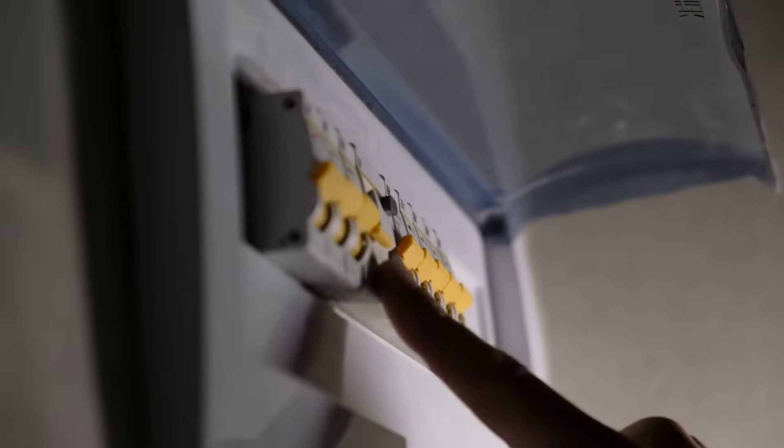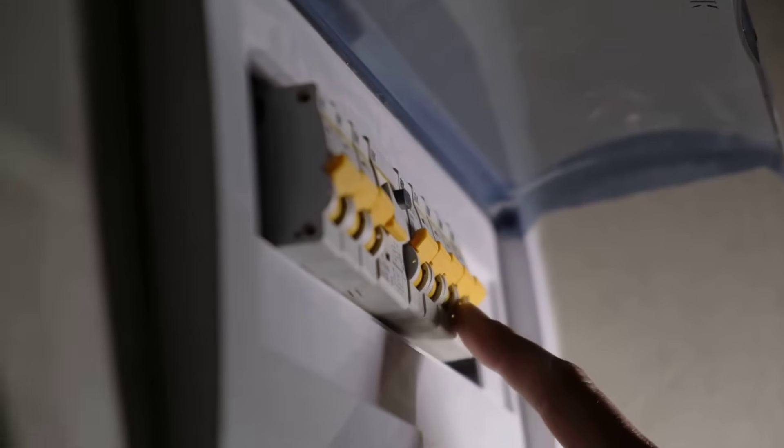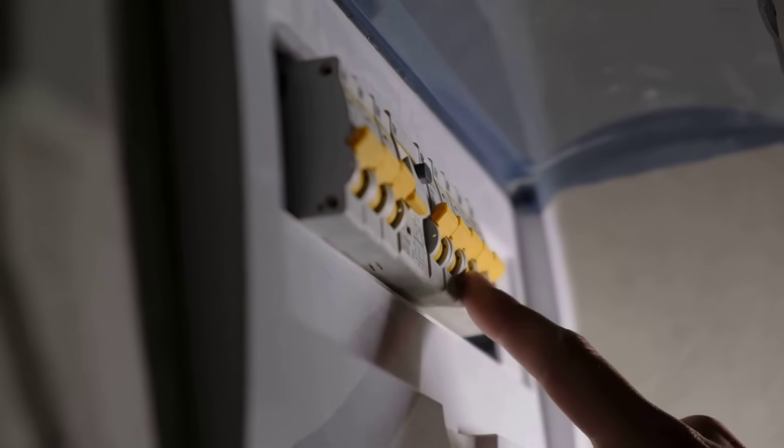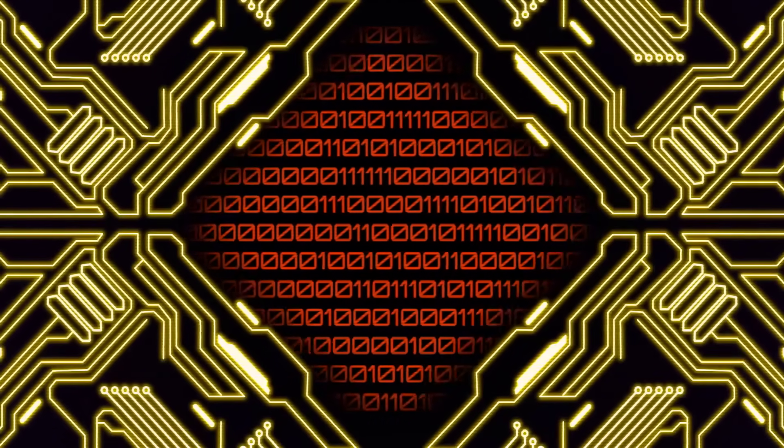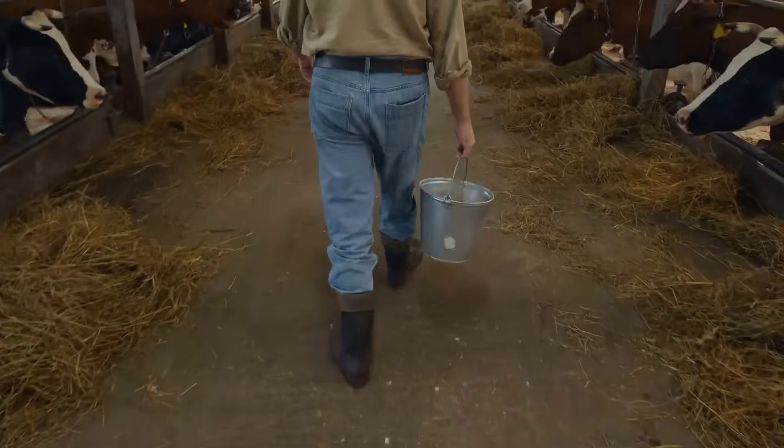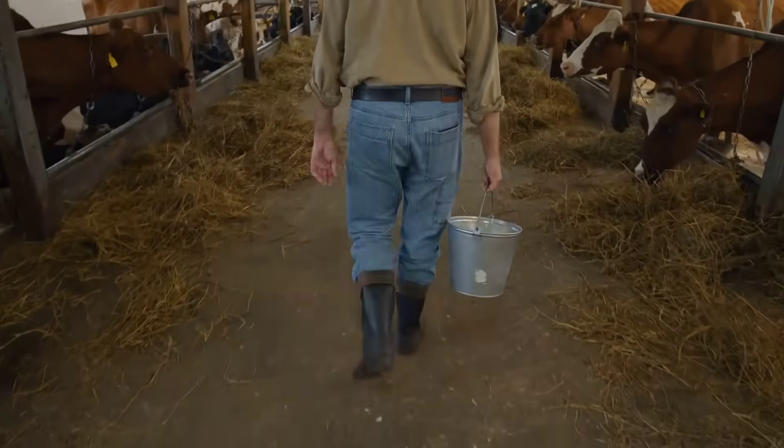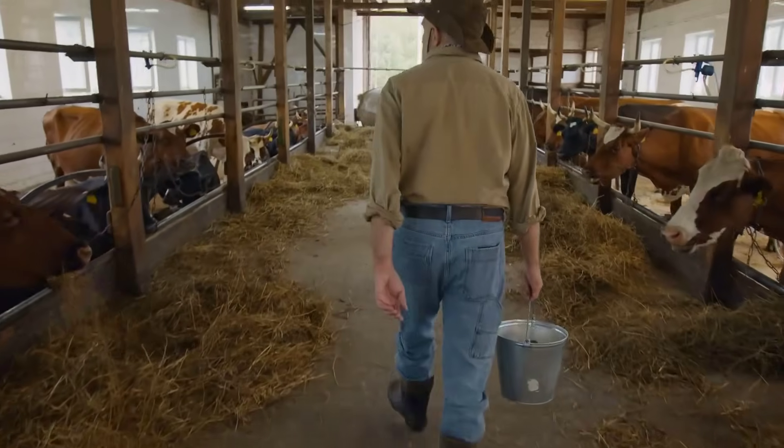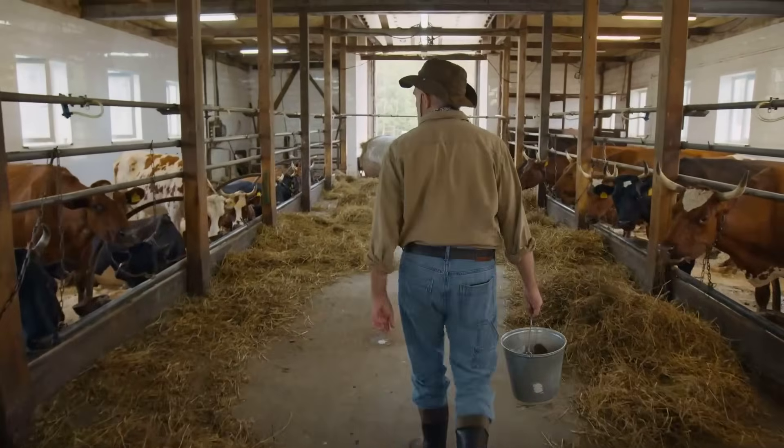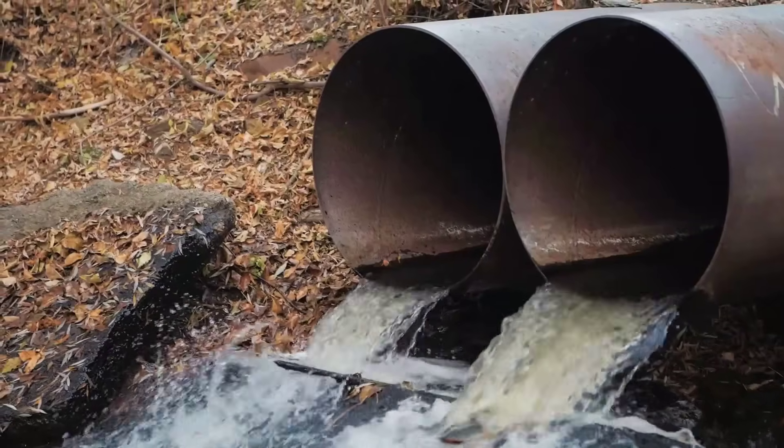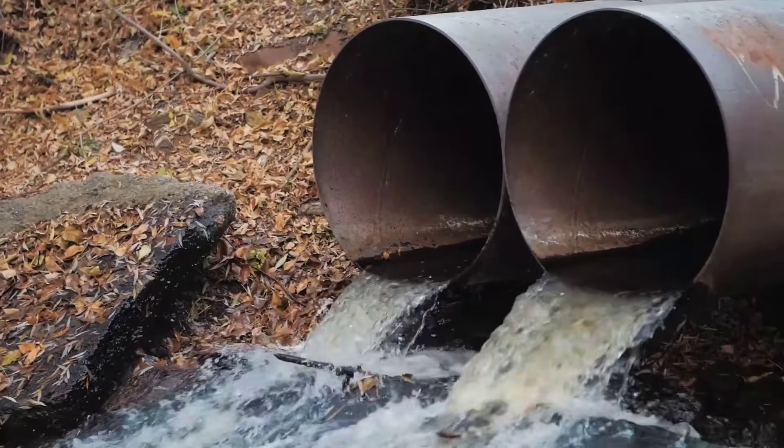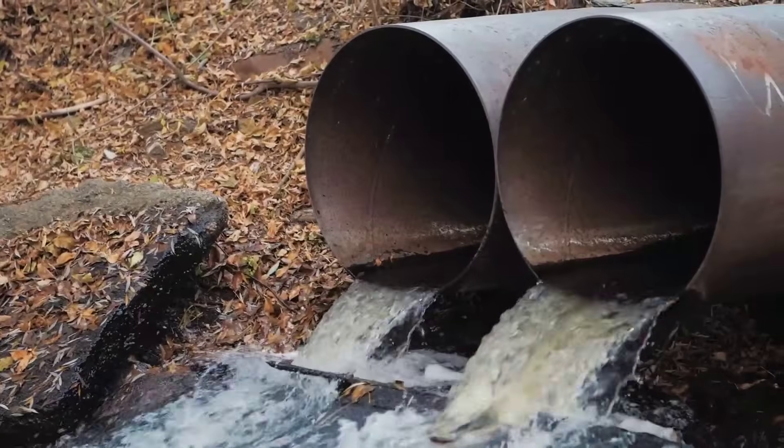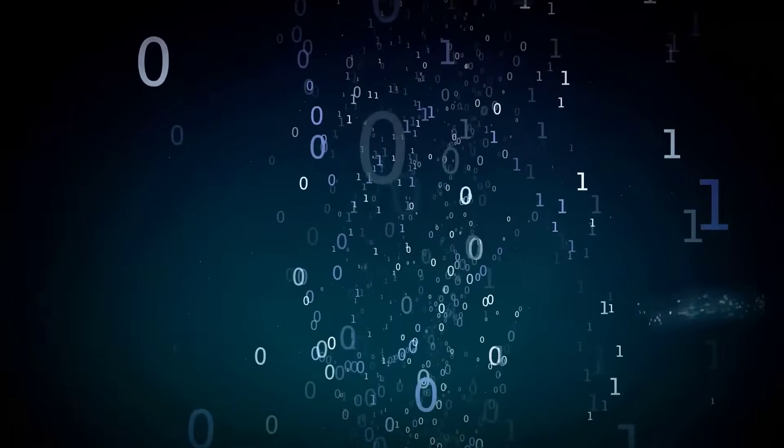Analogue AI doesn't use ones and zeros. Instead, it uses continuous values, like a dimmer switch instead of an on-off switch. It processes information using the physical properties of electrical circuits themselves. Think about it like this. Digital AI is like moving buckets of water back and forth between your house and a well. Exhausting, slow and wasteful. Analogue AI is like letting gravity flow water downhill through pipes. Effortless, instant and natural. That's the difference we're talking about.